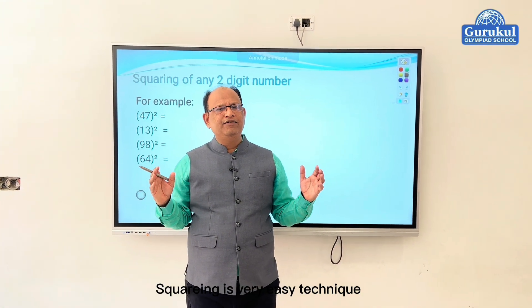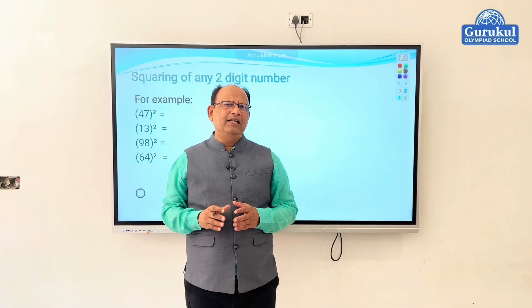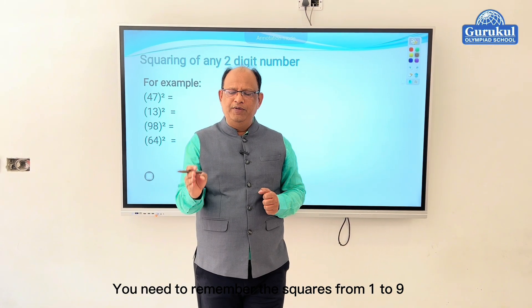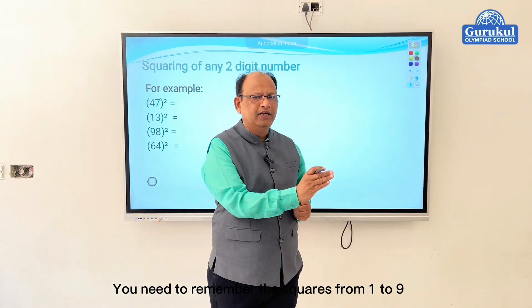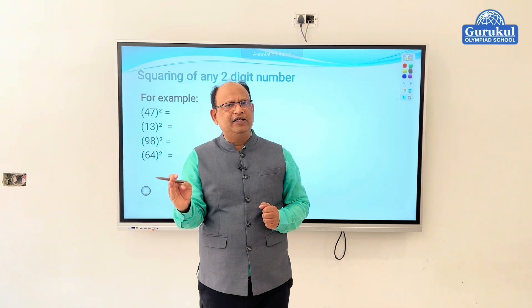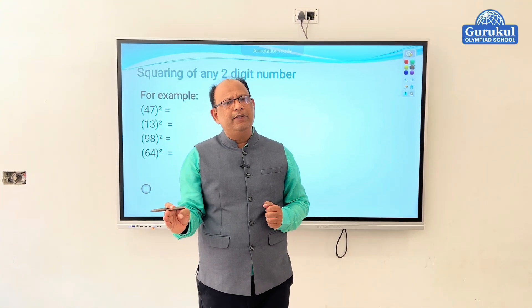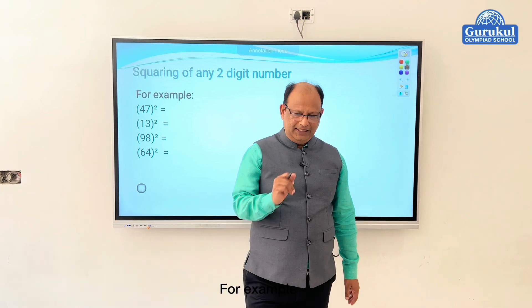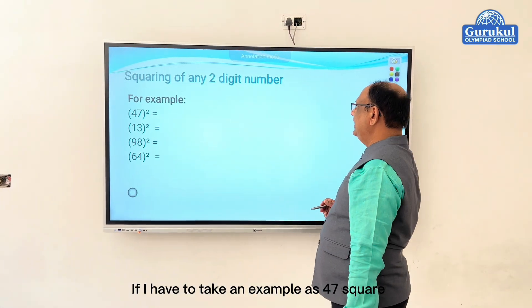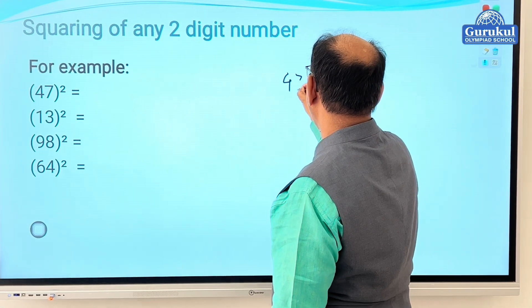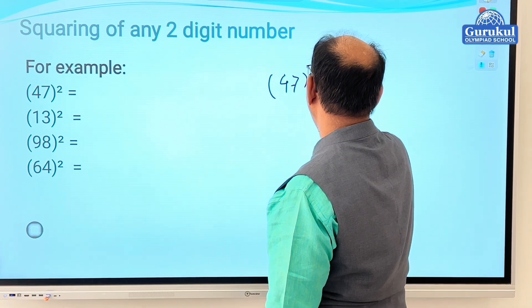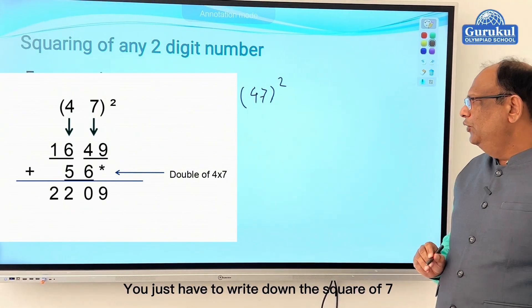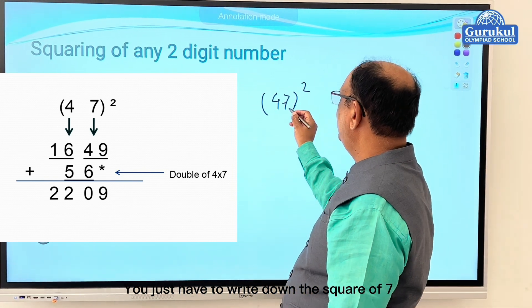Squaring is a very easy technique. If you have to find the square of any number, the golden rule says you need to remember the squares from one to nine. If you know squares from one to nine, you can easily find the square of any two-digit number. For example, if I have to take forty-seven squared.